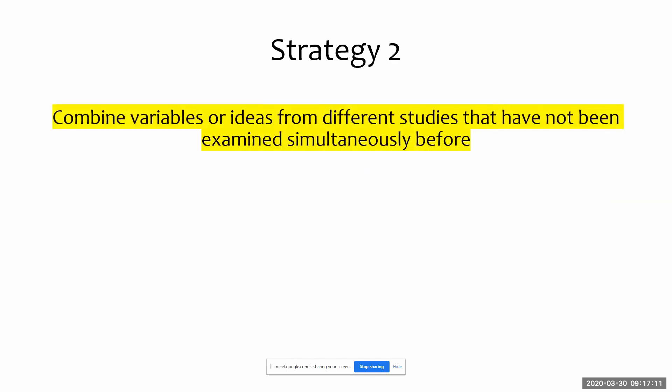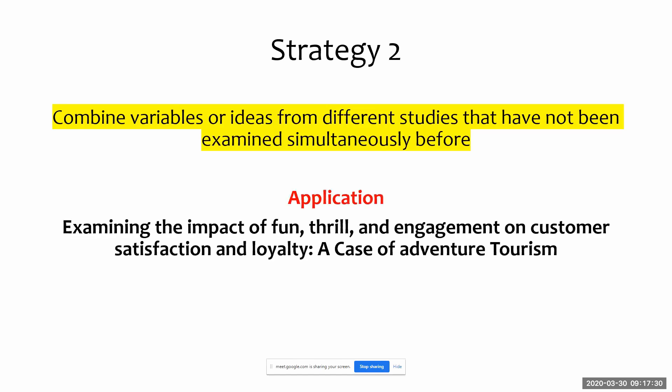Strategy number two: combine variables or ideas from different studies that have not been examined simultaneously before. This is what most people do — you pick up five different papers, merge all the models into one big model, and say this combination has not been done before. For instance, 'examining the impact of fun, thrill, and engagement on customer satisfaction and loyalty in adventure tourism.' It's a good strategy, but it can be a hard sell because you need to justify the linkages between those different models and why it's important to link them.